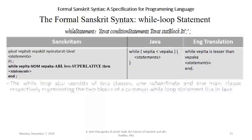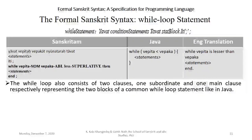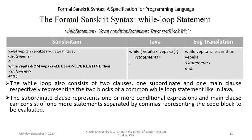While loop statement. The while loop statement also consists of two clauses — one subordinate and one main clause — respectively representing the two blocks of a common while loop statement in Java. Like in Java, the subordinate clause represents one or more conditional expressions, and the main clause can consist of one or more statements separated by commas representing the code block to be evaluated.